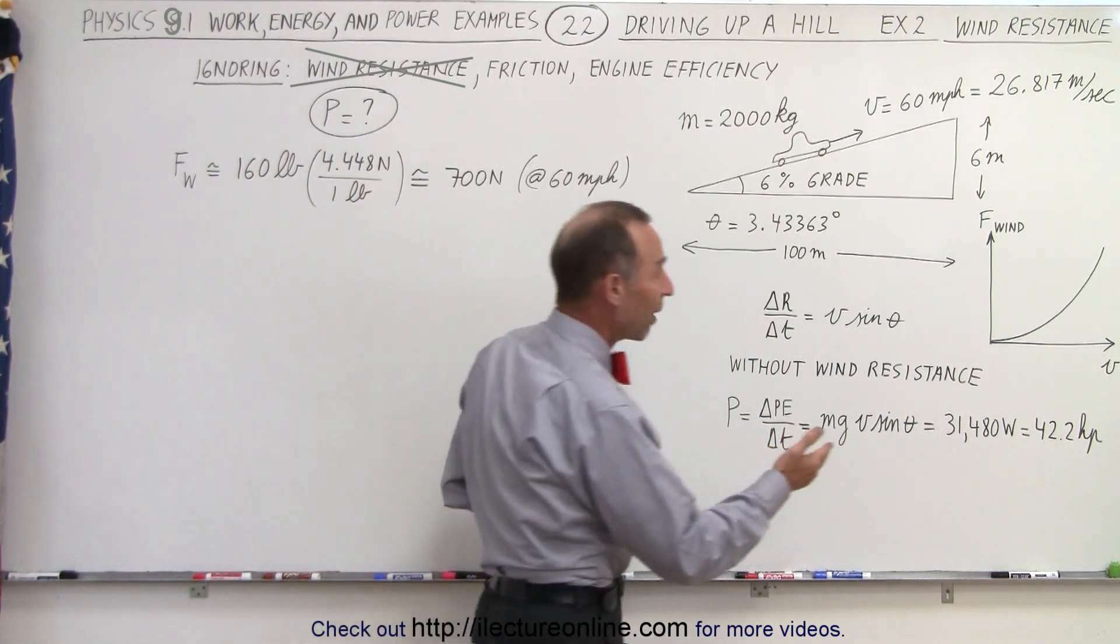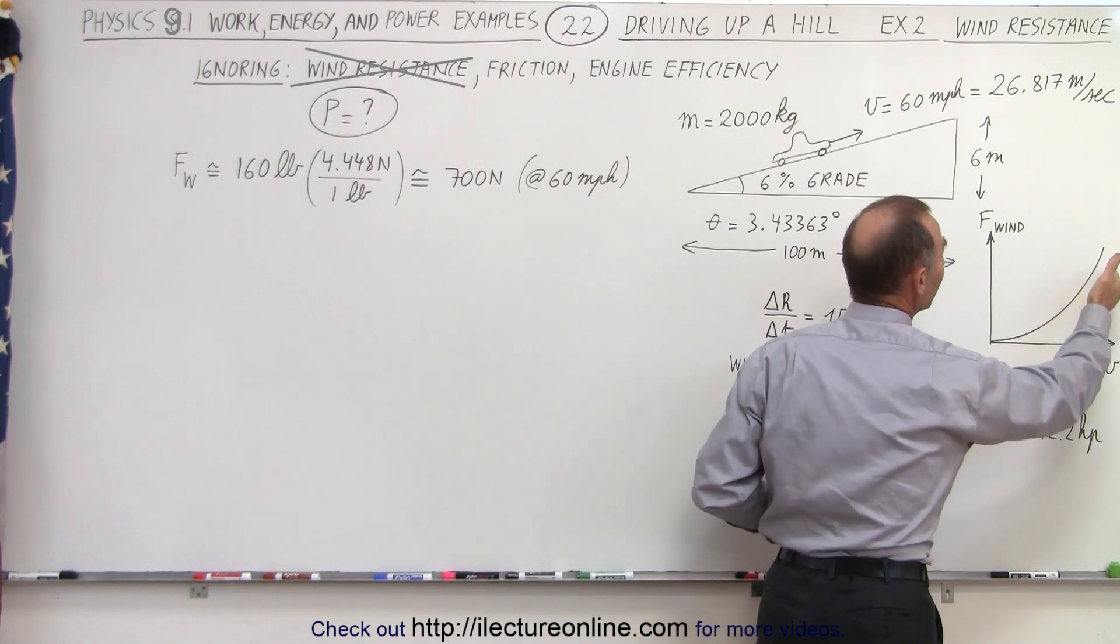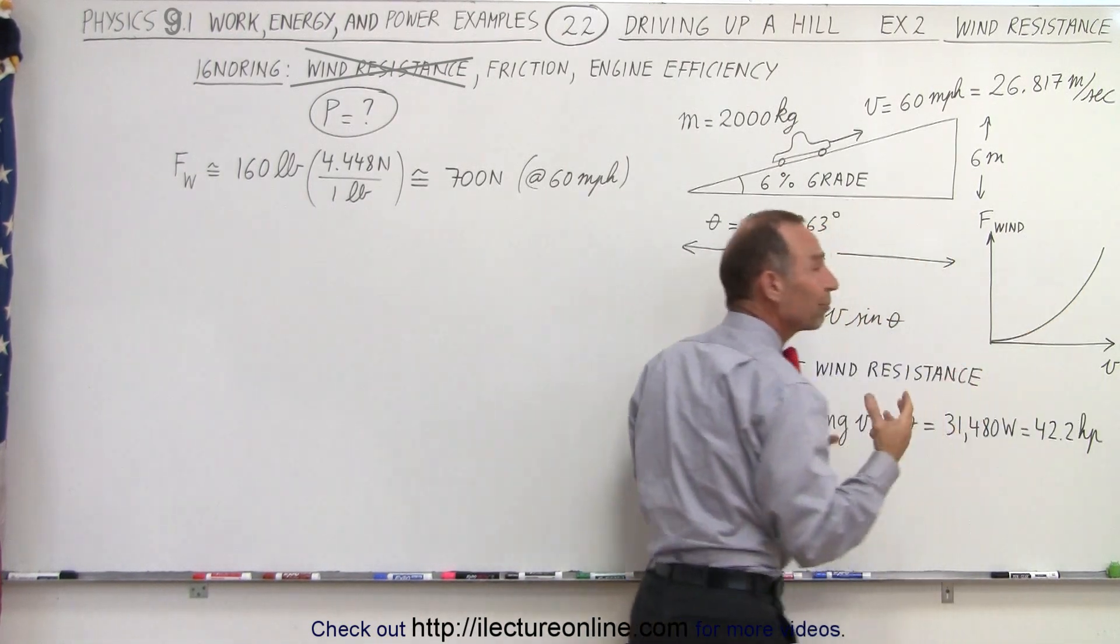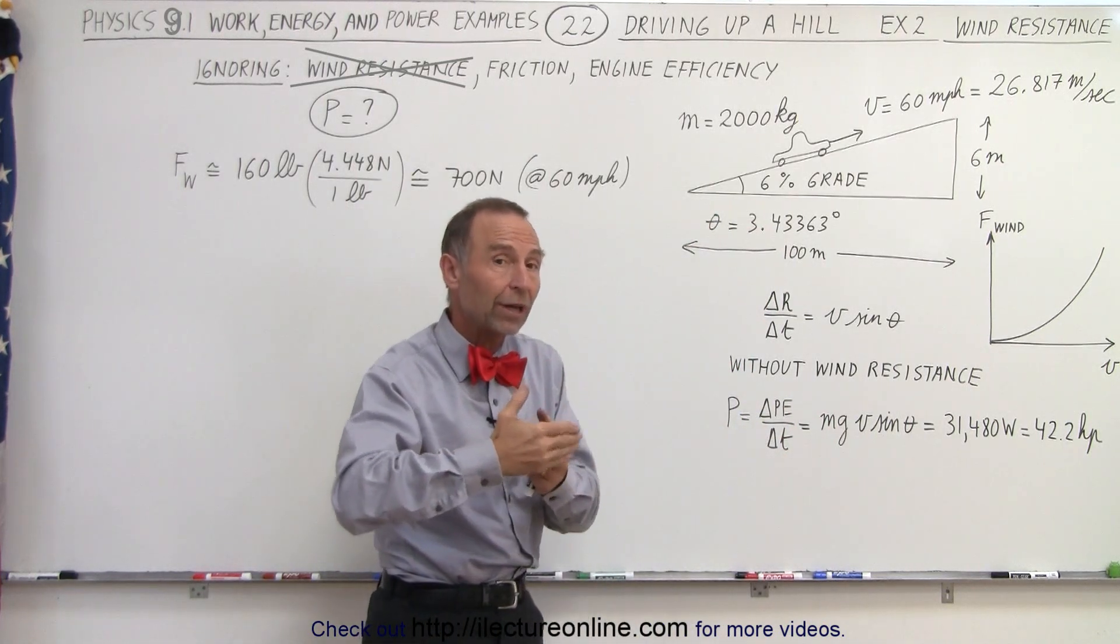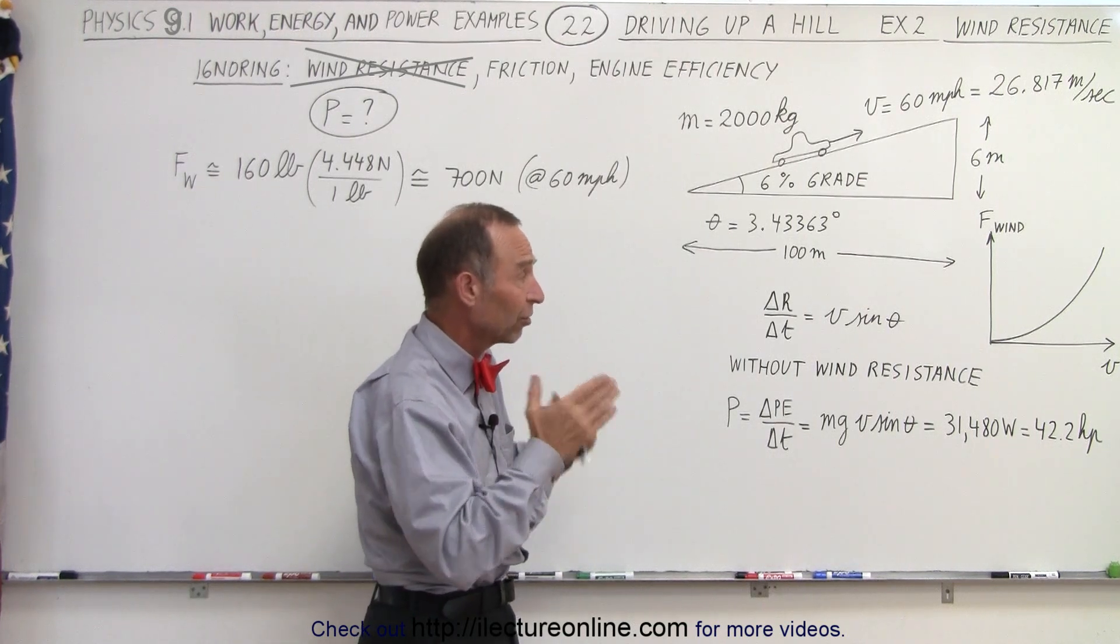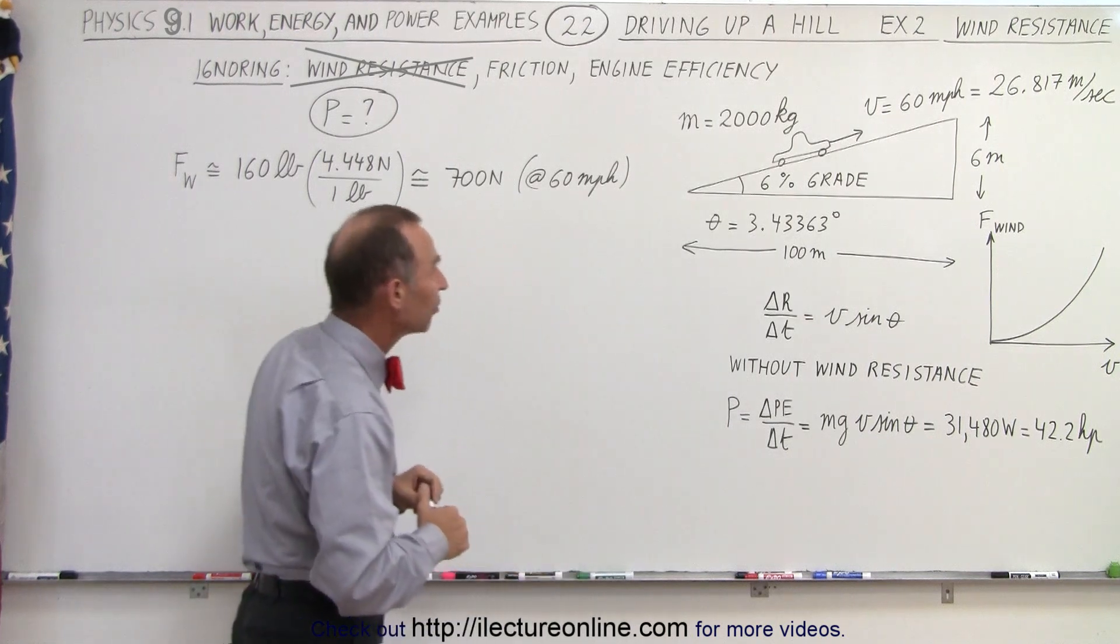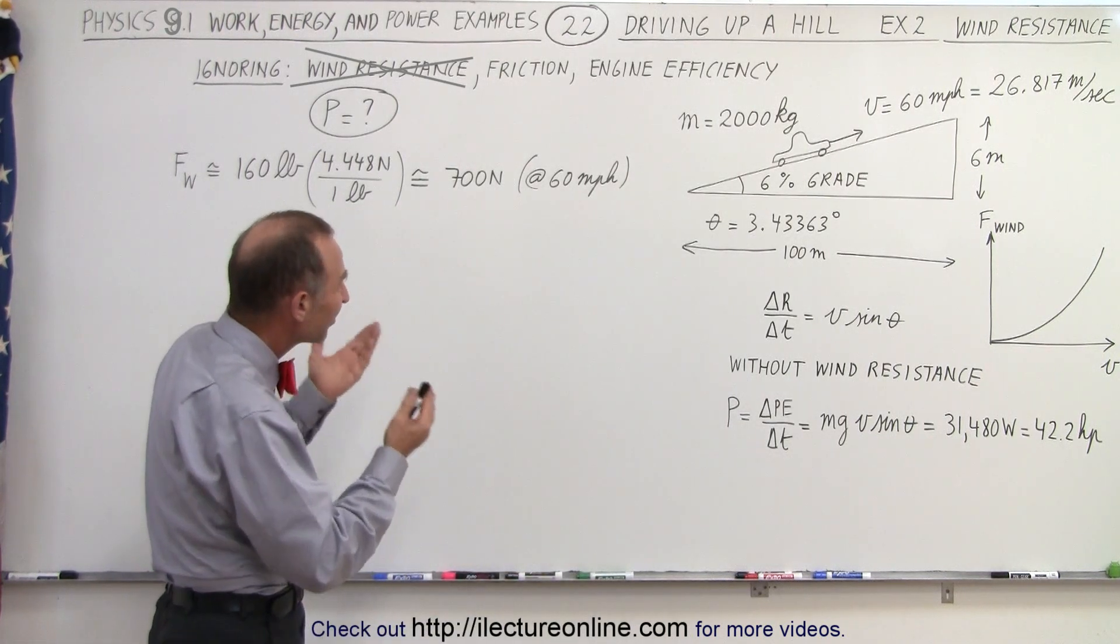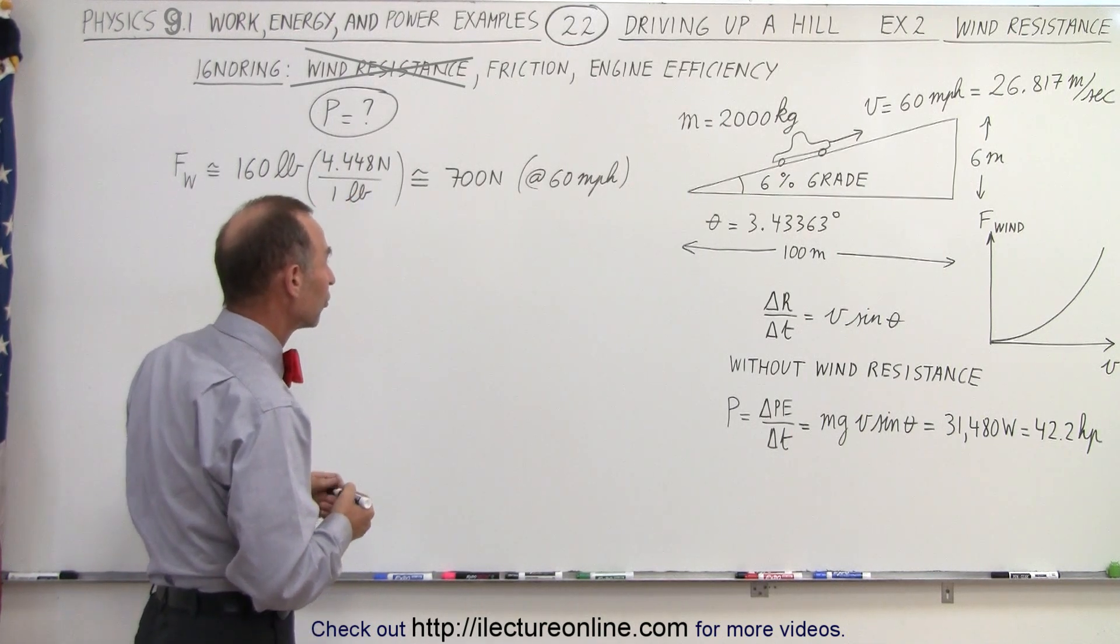You can see here on this graph that as the velocity increases, you can see a much more increasing opposing force caused by that wind resistance. So yes indeed, the faster you drive, the greater the wind resistance, and it's not a linear function. It's kind of like a quadratic function, so the wind resistance becomes quite large quite quickly as you begin to gain quite a bit of speed. But at about 60 miles per hour, about 100 kilometers per hour, it should be around 700 newtons.